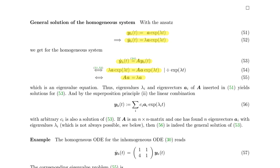Because of the superposition principle, we simply combine these solutions. If A is an n×n matrix, there are typically n linearly independent solutions, and hopefully one can find them by finding n eigenvectors. That is not always the case, but it is the easiest approach.